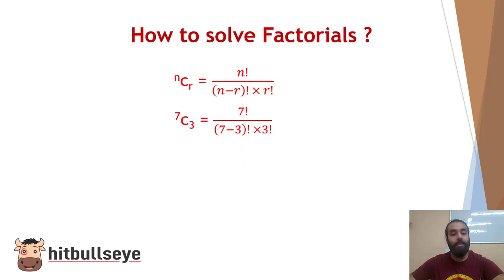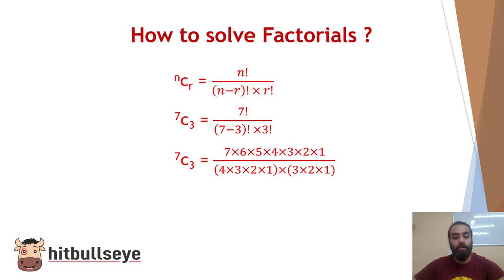So suppose if we take an example 7C3, that will be equal to 7 factorial upon 7 minus 3 factorial into 3 factorial. Solving this, we further open up the factorial part and we get 7 into 6 into 5 and so on. And in the denominator as well, we do the same: 7 minus 3 that will give us 4. So we will have 4 factorial multiplied by 3.